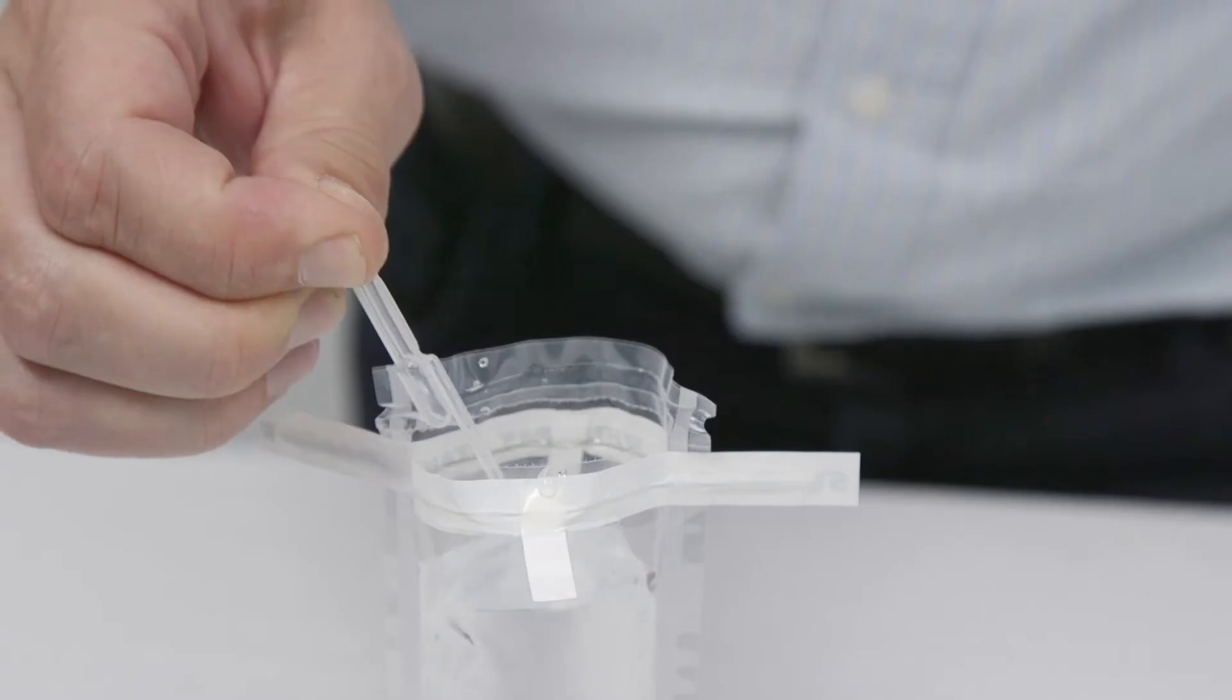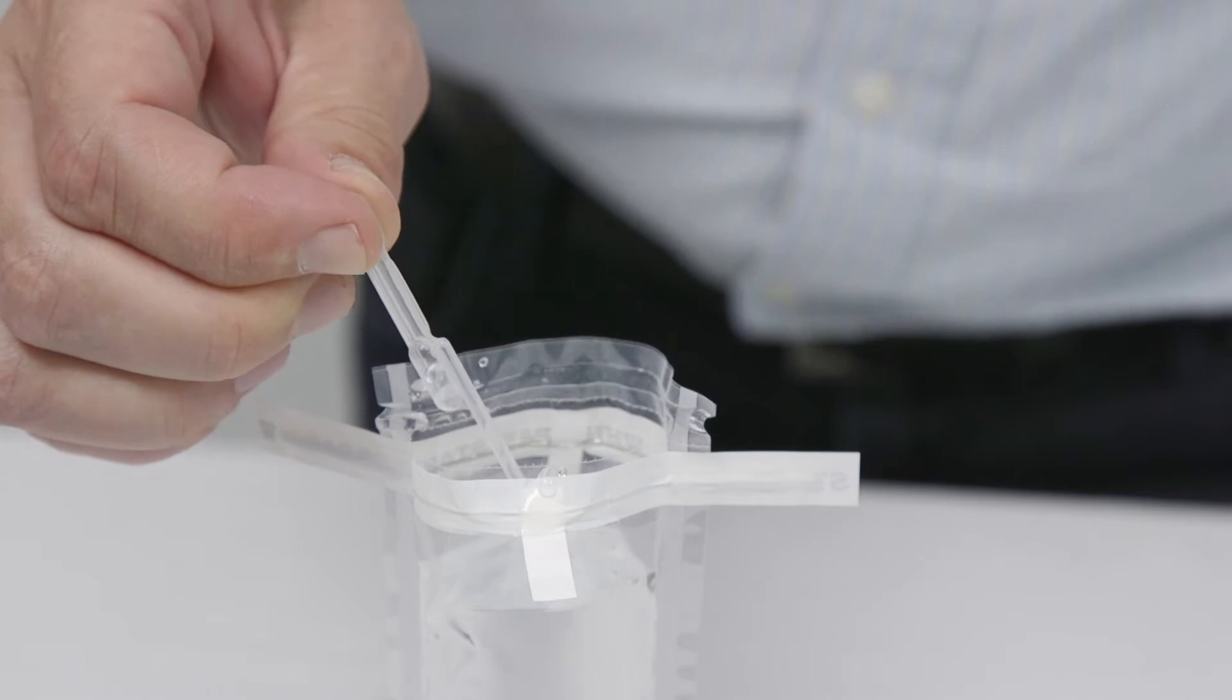To use the pipette, you depress the top bulb and place the tube into the sample, then let this bulb go and it draws up the liquid. In this tube here is exactly 100 microliters of sample, and this excess here in this bottom bulb should not be applied to the test.